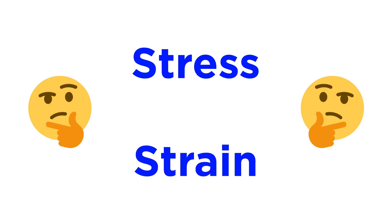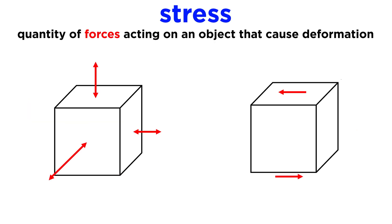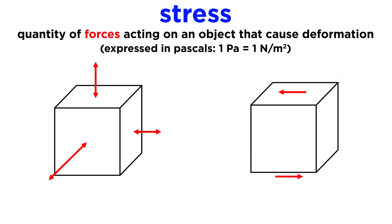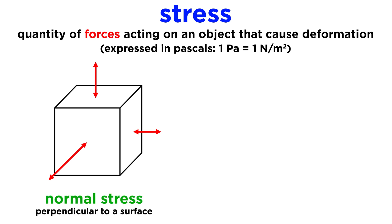Now, to better understand the mechanical behavior of rocks, we need to understand the concepts of stress and strain. Stress describes the quantity of the forces that cause deformation, and is expressed in terms of force per unit area, or pascals. Stress is equivalent to the pressure of a solid. There are three normal components of stress — with 'normal' meaning acting perpendicular to a surface — and each one describes the amount of stress in a particular direction in three-dimensional space.